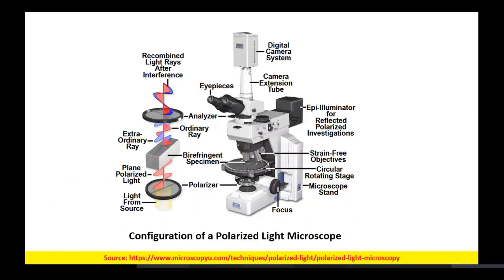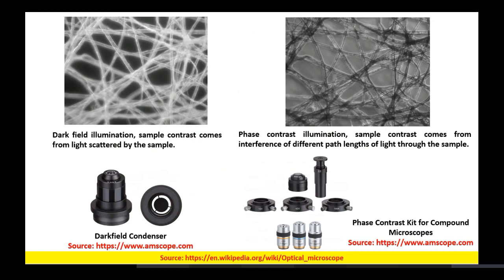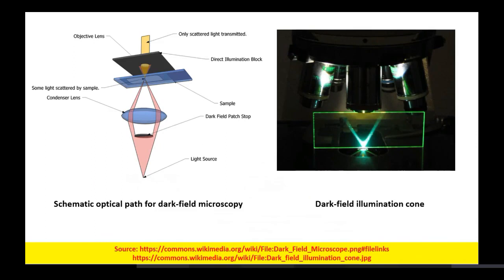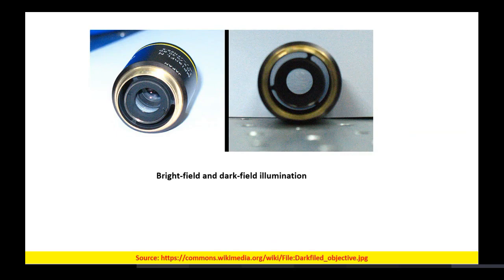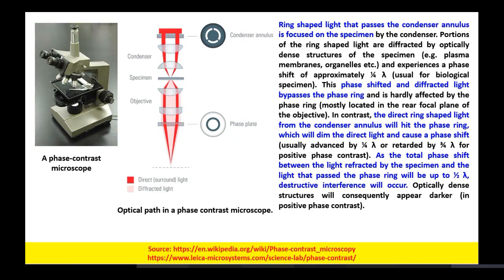We talked about the configuration of a polarized light microscope — where the polarizers and analyzers are placed. Then we discussed dark field illumination, how it is different from normal polarized light illumination, and the architecture of the dark field microscopic system. Next, we were to discuss phase contrast microscopy.